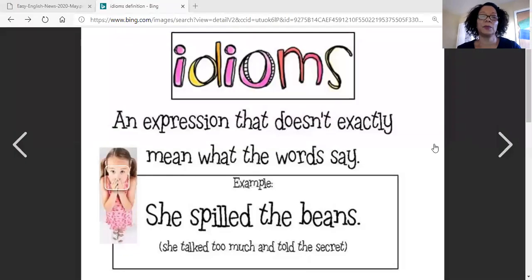I'll give you a definition of what an idiom is. An idiom is an expression that doesn't exactly mean what the words say. For example, here it says she spilled the beans. She spilled the beans. If you think of someone spilling beans, you think of for instance a glass of water.